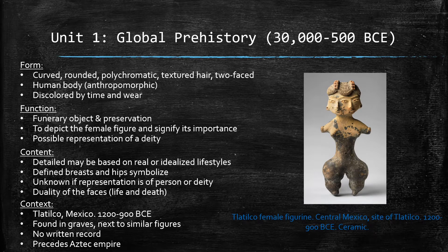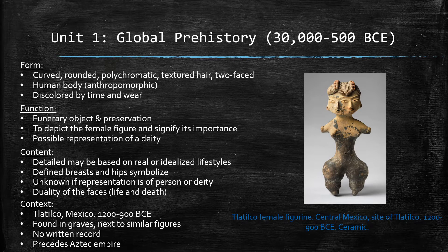So first we have the Tlatilco figure from Unit 1. The Tlatilco female figurine was made in central Mexico at the site of Tlatilco sometime between 1200 to 900 BCE, and it's made from ceramics. I chose the Tlatilco figure as a symbol of identity because in Mexico, duality is a prominent part of the culture. It is a recurring theme with various Mexican deities such as the twin deities Tlaloc and Huitzilopochtli. In Mexico's idea of duality, it is usually about how two opposites complement each other. For example, in the Tlatilco figure, the duality represented here is thought to be based on the duality between life and death. This is further proved by the figure's emphasis on fertility, propagated by the breasts and the large hips, which was essential to survive in prehistory.